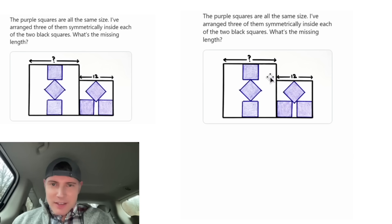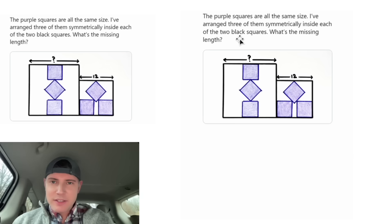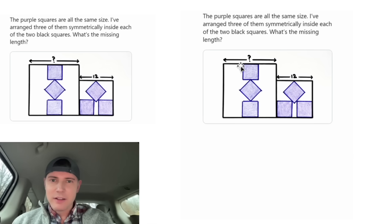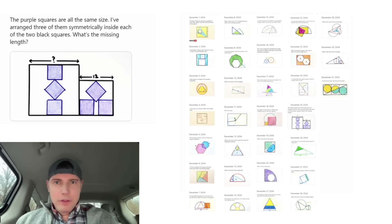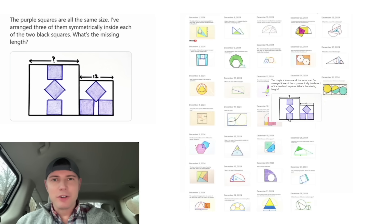This looks like a fun one. It says the purple squares are all the same size. I've arranged three of them symmetrically inside each of the two black squares. And it wants to know what is this missing length beside the larger square. This is day 25 of our Advent calendar. For the month of December, we're going to solve 31 Katrina Ag puzzles in 31 days.